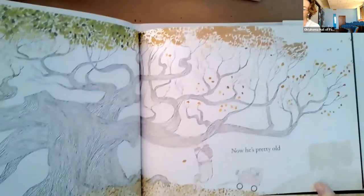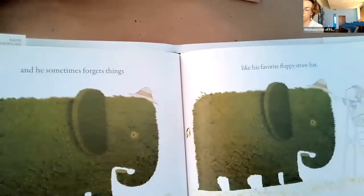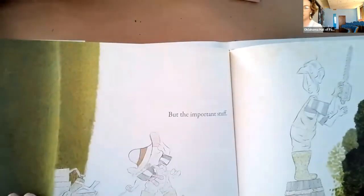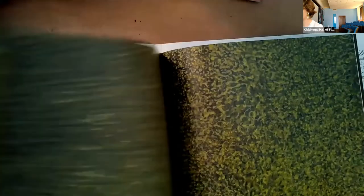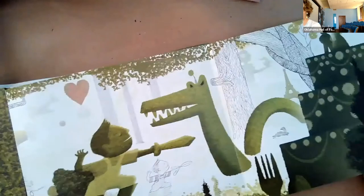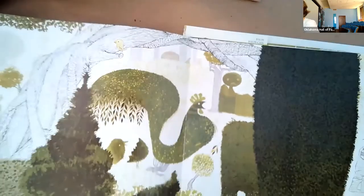He used to remember everything. Now, he's pretty old. And sometimes he forgets things, like his favorite floppy straw hat. But all the important stuff. And that is the end of our book.